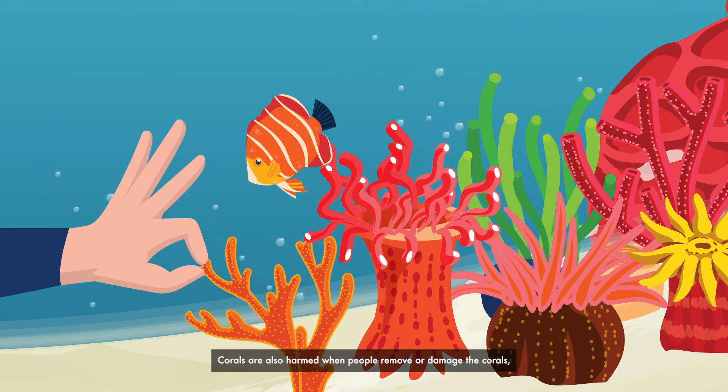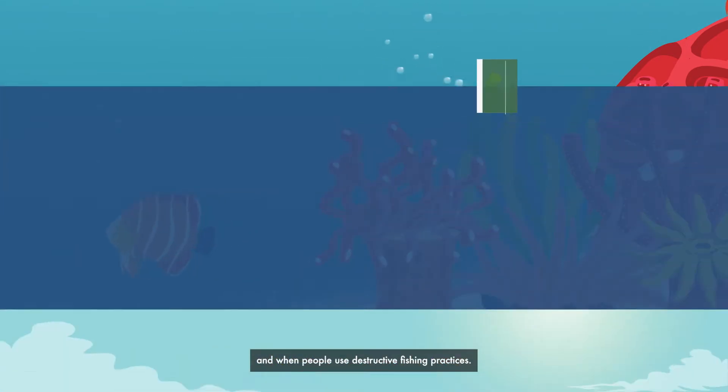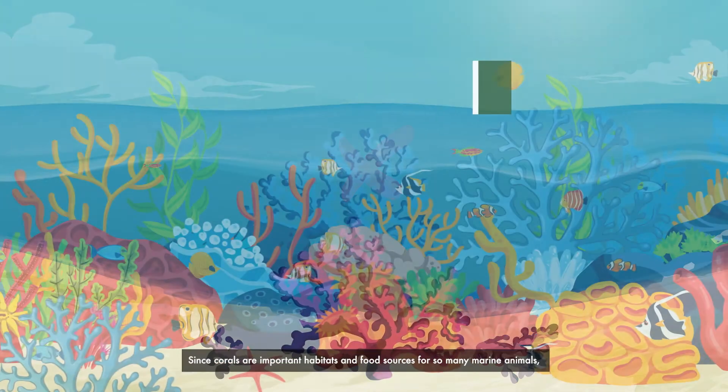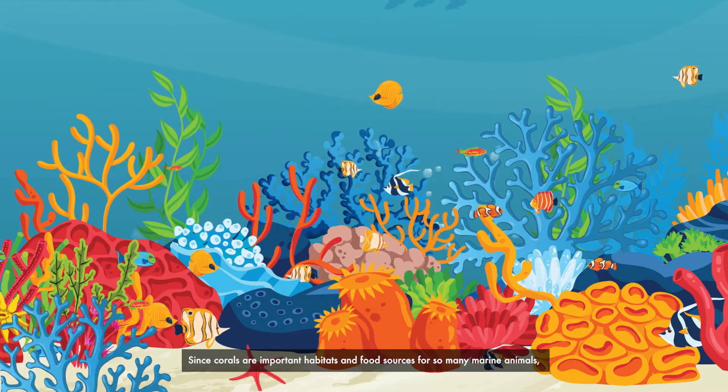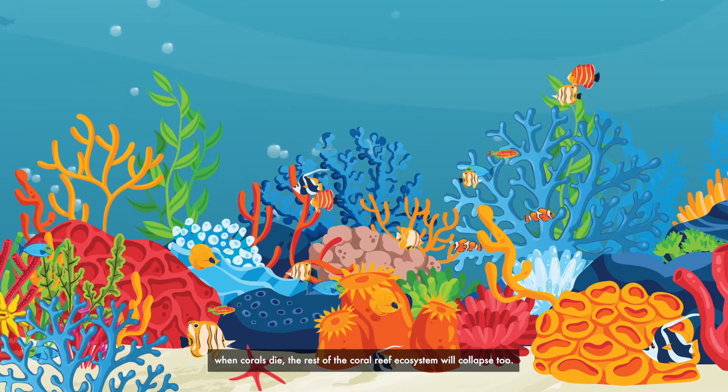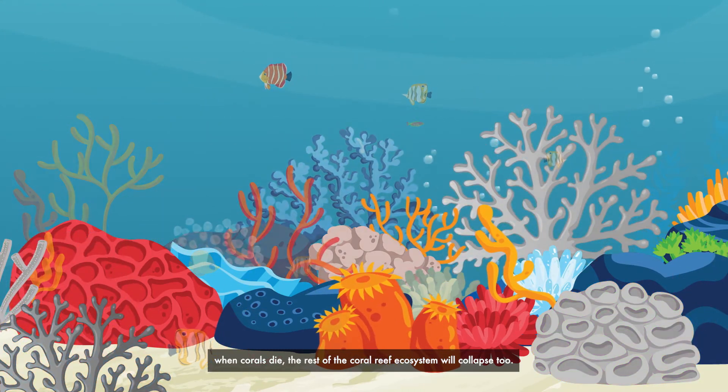Corals are also harmed when people remove or damage the corals and when people use destructive fishing practices. Since corals are important habitats and food sources for so many marine animals, when corals die, the rest of the coral reef ecosystem will collapse too.